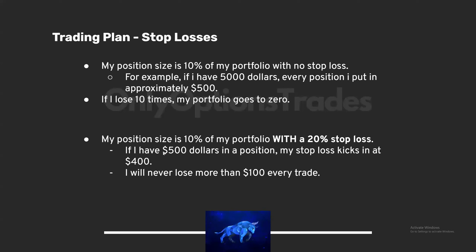If my position size is 10% of my portfolio with a 20% stop loss, I will never lose more than $100 in any trade. So we just changed from having the potential to lose $500 from every trade to only losing $100 every trade — but we still have the same leverage in the position. We still have the potential to make 100% from the $500. Now my maximum risk is much smaller, shifting the risk-to-reward in our favor.